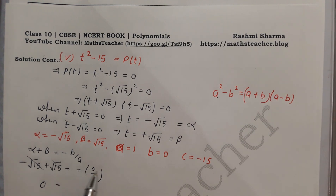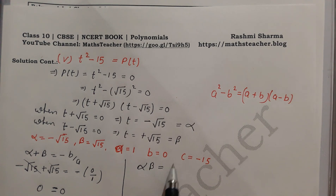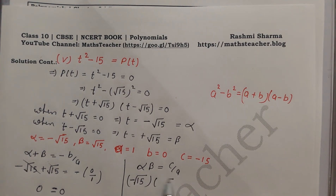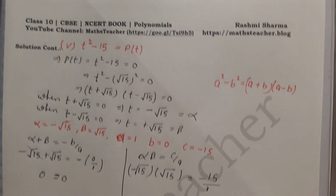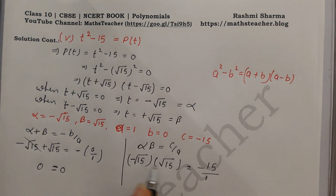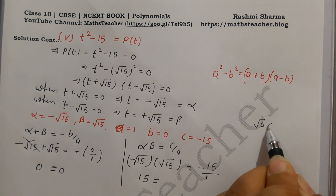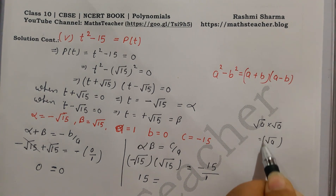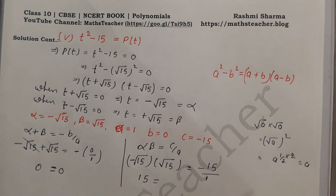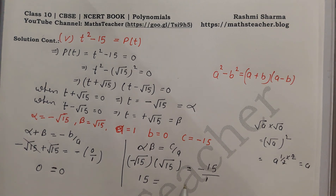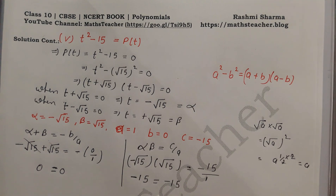Now for the product of zeros: alpha times beta equals c by a. Substituting alpha equals minus under root 15 and beta equals plus under root 15: minus under root 15 times plus under root 15 equals minus 15 divided by 1. Under root 15 times under root 15 equals 15, and minus times plus gives minus 15. Hence verified.